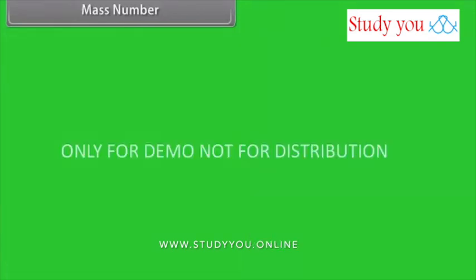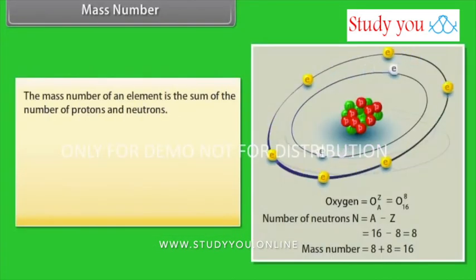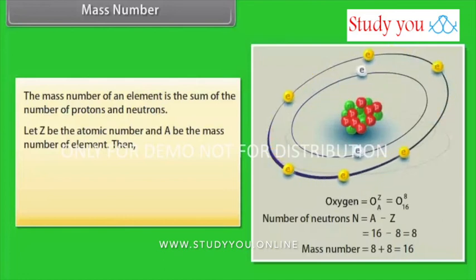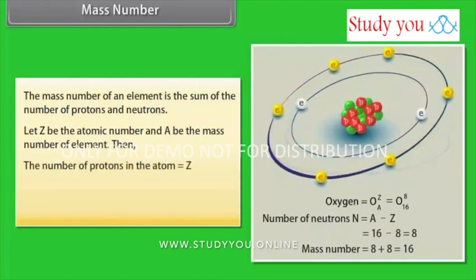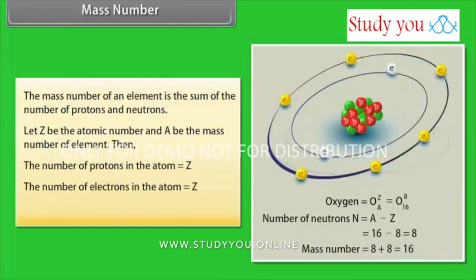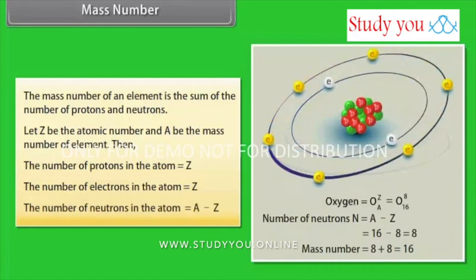Mass number. The mass number of an element is the sum of the number of protons and neutrons. Let Z be the atomic number and A be the mass number of element. Then the number of protons in the atom equals Z. The number of electrons in the atom equals Z. The number of neutrons in the atom equals A minus Z.